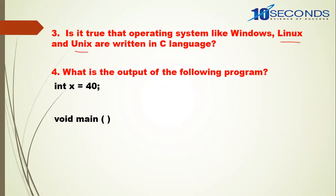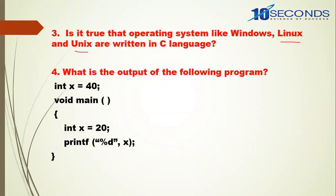What is the output of the following program? There is one global variable x equal to 40 and one local variable x equal to 20. A local variable enjoys more priority than a global variable. Stack memory is allocated to x and 20 is stored there. So printf %d prints 20, not 40 — the CPU first searches for x in the current function, and only goes to the global variable if it is not found locally. The output is 20.